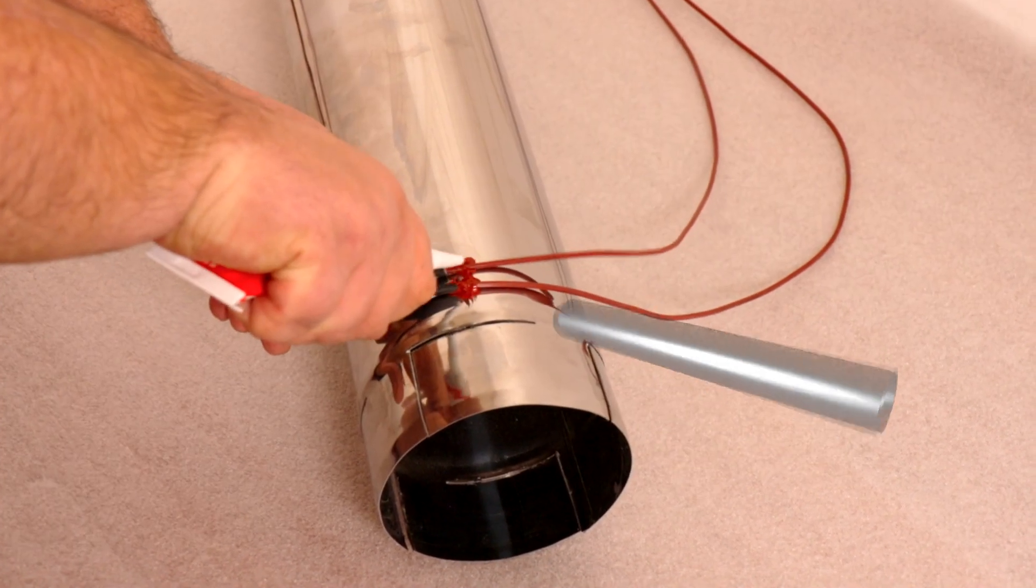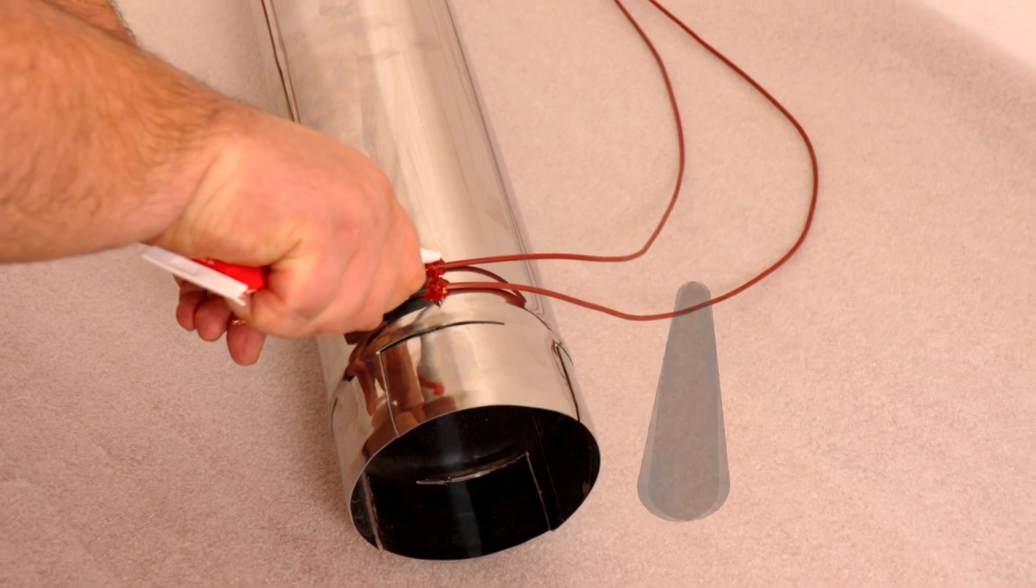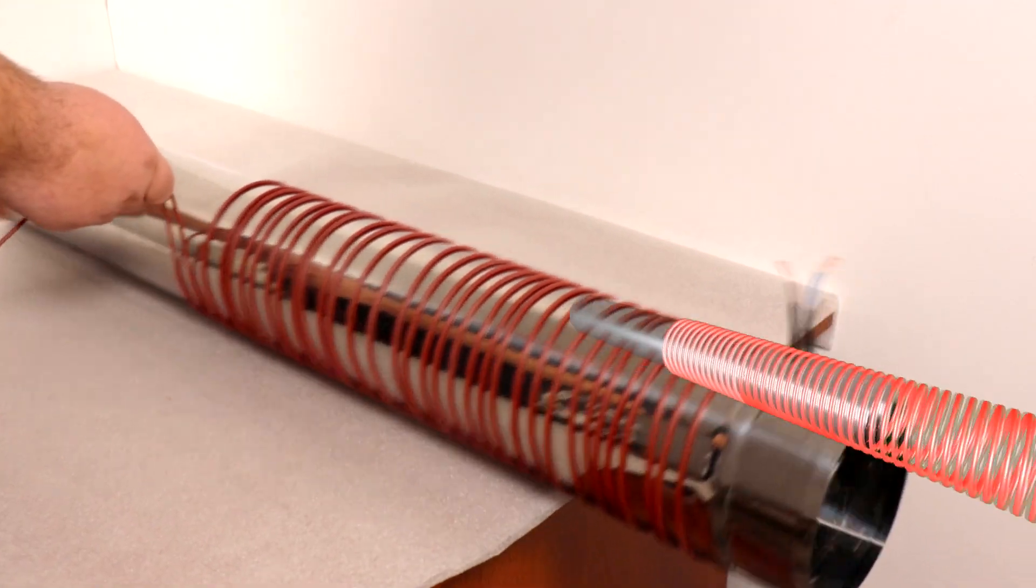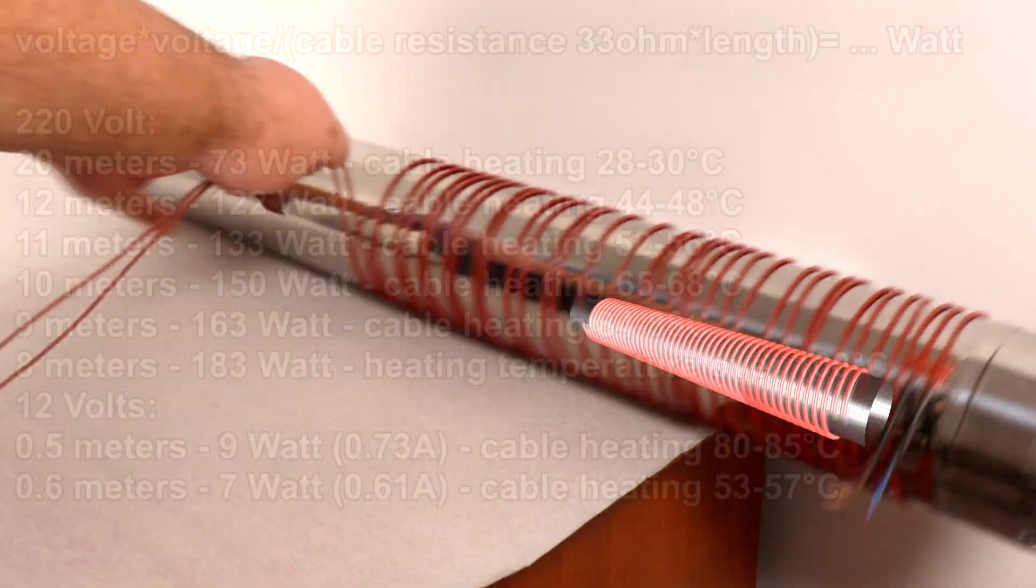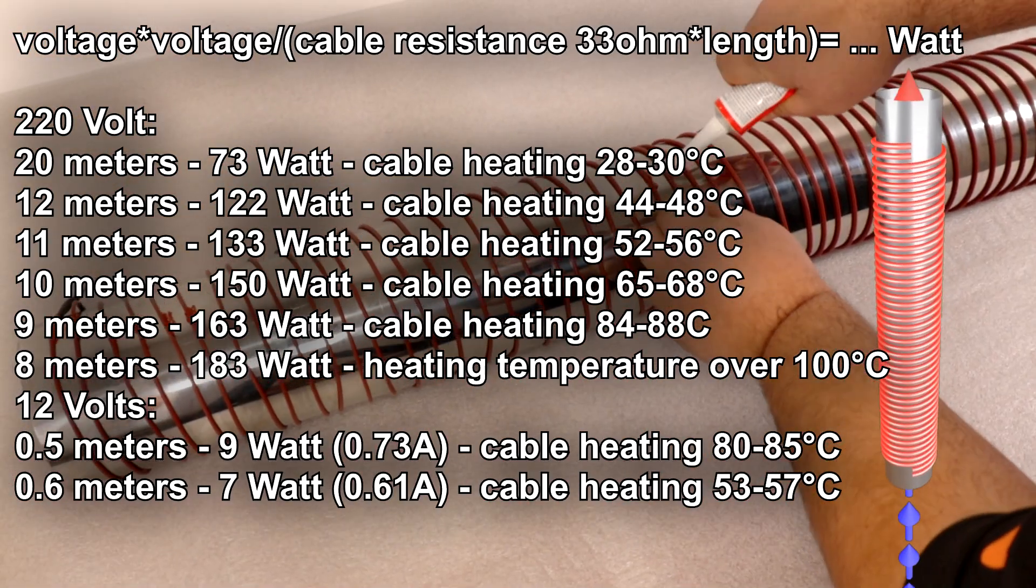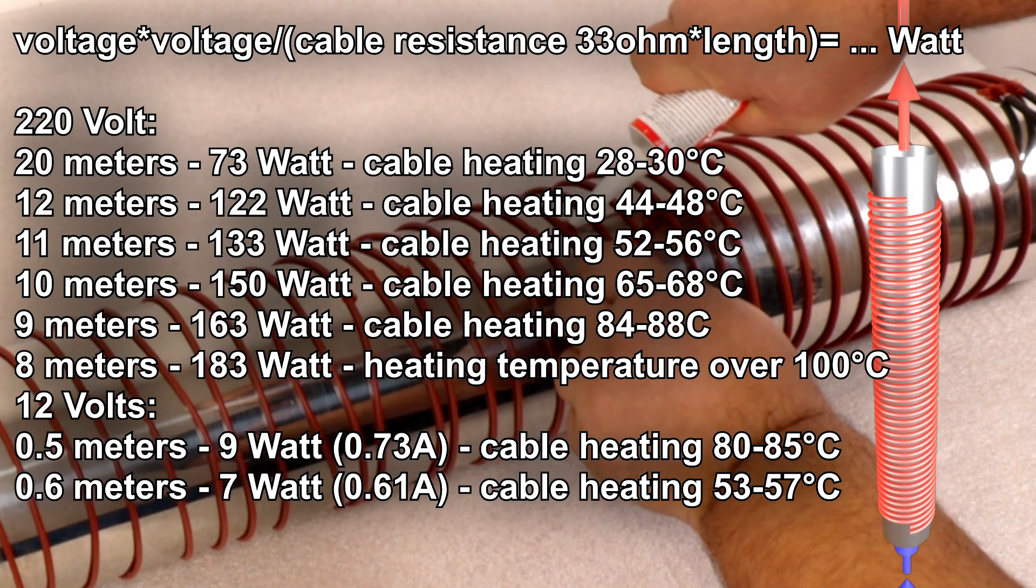I will wire two cables in parallel to double the power. Calculating power, length and voltage is based on the formula in the cable manual. Approximate calculations for 220 volts and for 12 volts are on the screen. I used two parallel lengths of 9 meters, which is only 320 watts, like a powerful laptop charger.